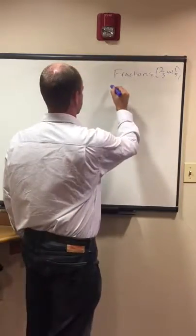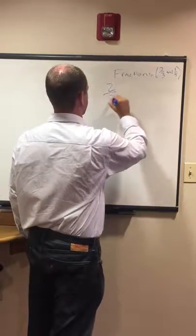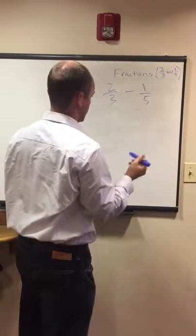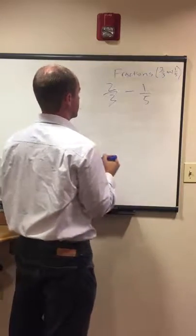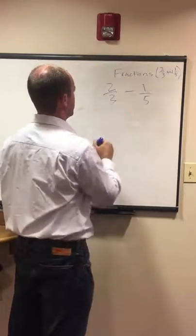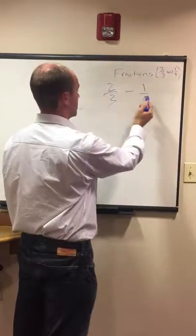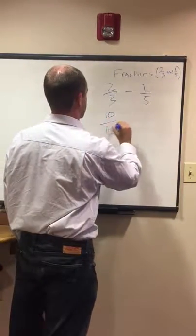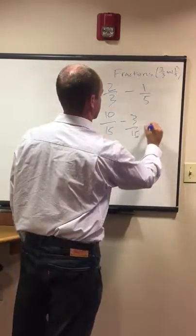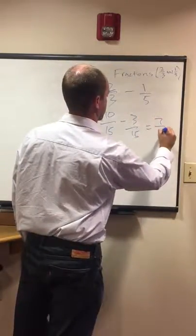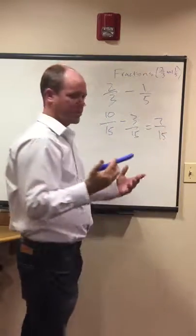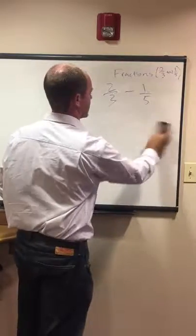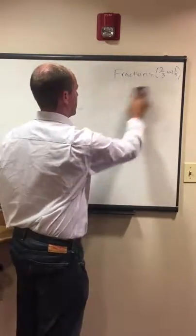If you're going to subtract these two, 2/3 minus 1/5, you're basically doing the same thing. We just got this one to equal 10/15 and we got this one to equal 3/15. So if you subtract them, 10/15 minus 3/15 equals 7/15. We added those to get 13/15, subtract them to get 7/15. Exactly the same thing, needing to find the common denominator.